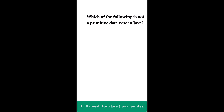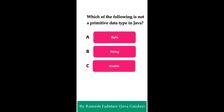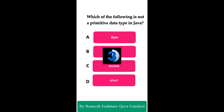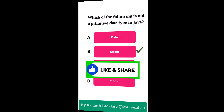Which of the following is not a primitive data type in Java? Option A: byte. Option B: String. Option C: double. Option D: short. The answer is String. String is a reference data type, not a primitive data type. Java supports eight primitive data types: byte, short, int, long, double, float, char, and boolean. String is not a primitive data type — it is a reference data type, specifically an inbuilt class in Java.